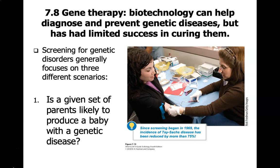Screening can be very beneficial in helping families with their family planning, combined with genetic counseling. In the case of Tay-Sachs, since screening began in 1969, the incidence of Tay-Sachs has actually been reduced by 75%, because people who think there's a good chance are participating in screening for genetic disorders.